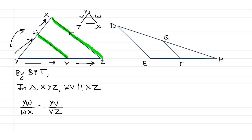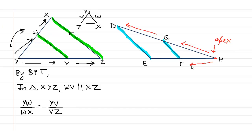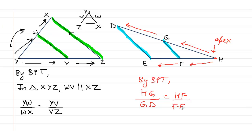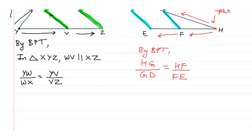Remember to find the vertex. In this case, GF is parallel to DE. The point not on the parallel line is point H, so H is the apex or vertex of the triangle. Therefore, BPT gives us HG upon GD is equal to HF upon FE.